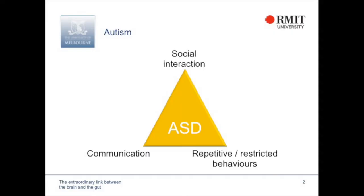Everybody knows someone with autism — it's extremely common. The latest statistics suggest that 1-2% of all school-aged children have been diagnosed with autism. Autism is diagnosed behaviourally, and to get that diagnosis you need to have deficits in social communication and show repetitive or restricted behaviours. You have to have these traits at a level that's severe enough to impact on your everyday life.